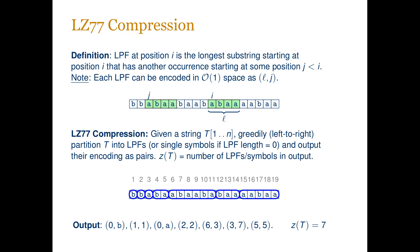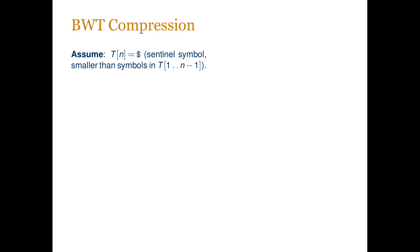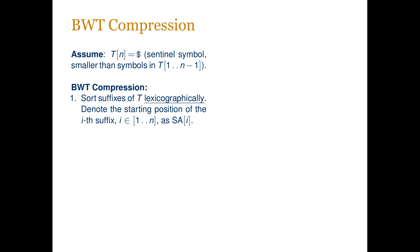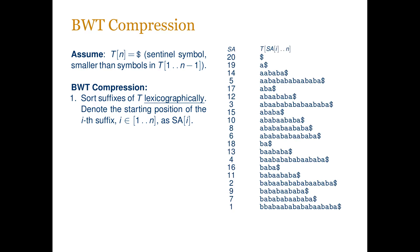Let us now define BWT compression. Let T be a string of length n. We assume that the last symbol of T is a special sentinel symbol denoted by a dollar sign, which is strictly smaller than all other symbols in the text. The Burrows-Wheeler compression is defined as follows: we start by lexicographically sorting all suffixes of the text. We denote the starting position of the i-th lexicographically smallest suffix as SA(i) — SA stands for suffix array. For example, since the lexicographically smallest suffix starts at the last position of the text, we always have n as the first element of the suffix array. The second value is 19, corresponding to the second lexicographically smallest suffix.